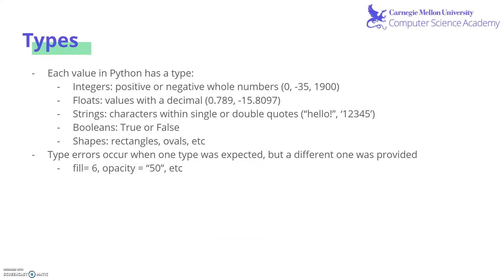In Python, each value has a type, and here are some listed below. We have integers, which are positive or negative whole numbers, floats, which are values with a decimal, strings, which are characters within single or double quotes, booleans, that are true or false, and shapes, which we already know quite a few of, such as rectangles, ovals, etc.